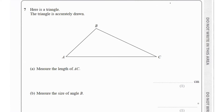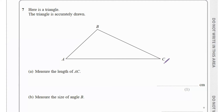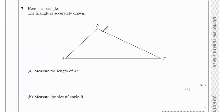Question 7 shows a triangle that is accurately drawn. To measure the length of AC, use your ruler on line AC and measure the distance. Since this is done digitally, measure it directly in centimetres. For the size of angle B, place your protractor at point B, aligning the centre at point B, and read off the angle measurement.